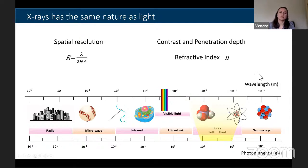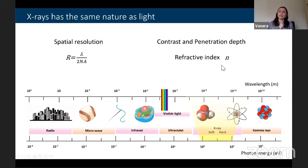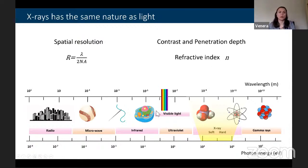Because x-rays and visible light have the same nature, the same physical rules apply: spatial resolution for both a light and an x-ray microscope depends on wavelength and numerical aperture. The wavelength of x-rays is much shorter than visible light, so they can provide better spatial resolution per se. The contrast and penetration depth of x-rays, like visible light, depends on the refractive index n. For most materials, visible light interacts very strongly with matter, while x-rays do not, so they can penetrate very large objects.